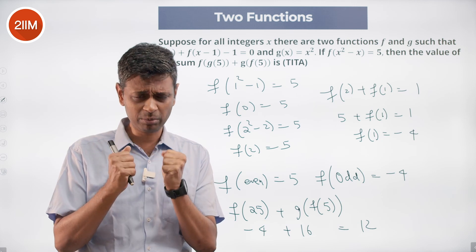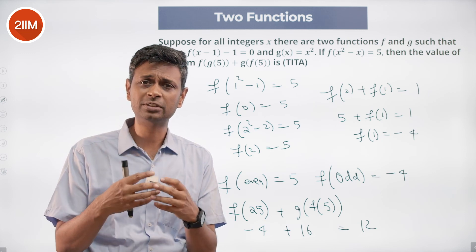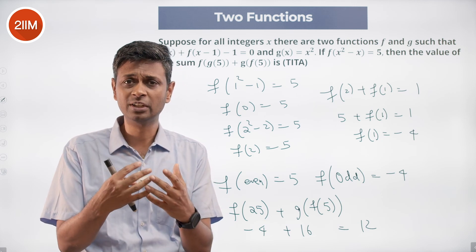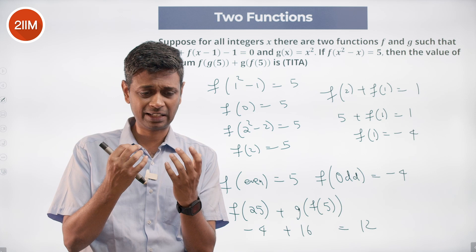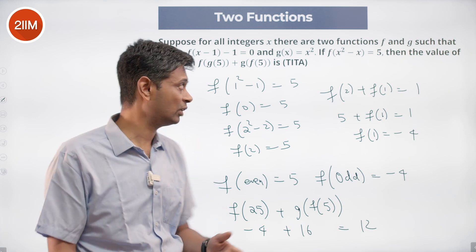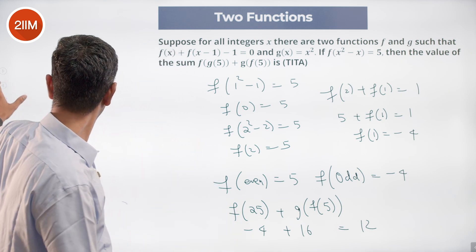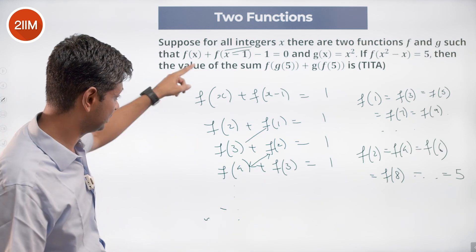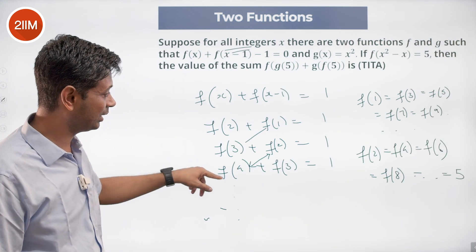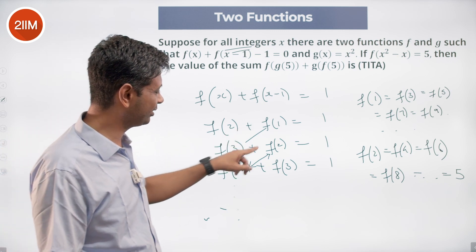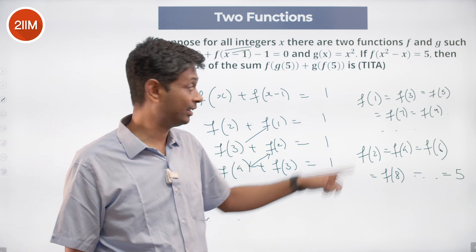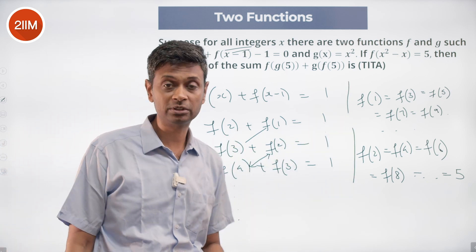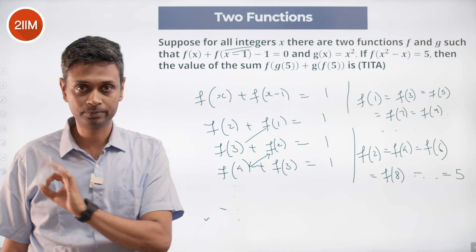The key is being comfortable with writing equations, drawing the link between them, and recognizing that all odd-input values are the same and all even-input values are the same. That basic comfort level is super important.